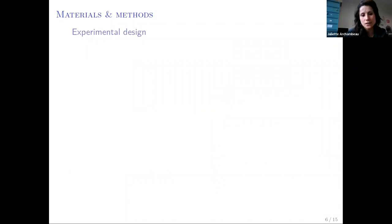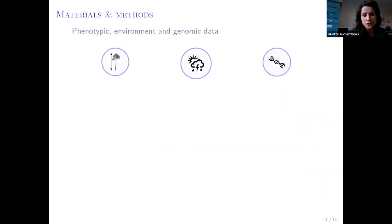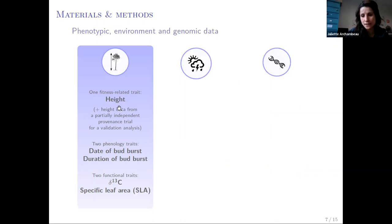Regarding the experimental design, we used three clonal common gardens located in the Atlantic region in which 33 populations were planted. For each tree, we had height data in the three common gardens and at two different ages in one common garden, and we also had height data from a partially independent trial that we used in a validation analysis. We also had two phenology-related traits, the date and duration of bud burst, and two functional traits: isotope discrimination, a proxy of water use efficiency, and the specific leaf area.